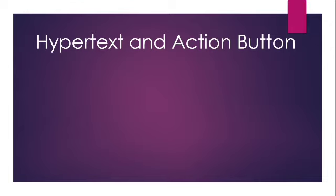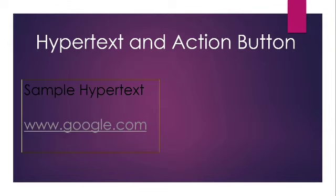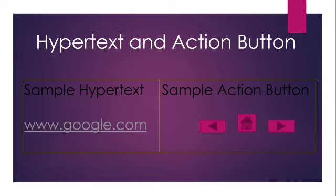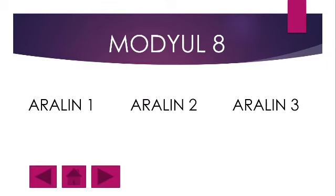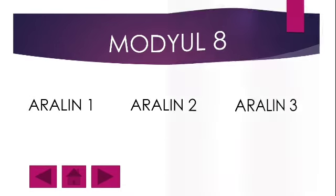Hypertext and Action Button. Ano ang Hypertext at ano naman ang Action Button? Ang halimbawa ng Hypertext ay ang nasa baba — parang itong link. Ang Hypertext ay isang link. Ang Action Button naman ay ang mga button na nakikita ninyo — Home, Forward, and Backward Button. Sa halimbawa natin, meron tayong Aralin 1, Aralin 2, saka Aralin 3, at meron ang Action Button sa baba.